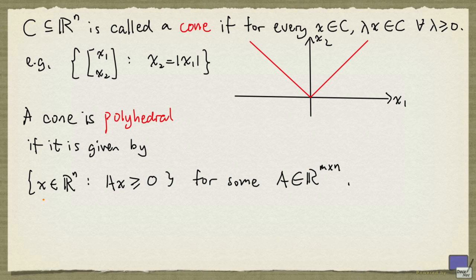Clearly, if we take an x in this set, all non-negative scalar multiples of x will satisfy these inequalities. So this is a cone. Polyhedral cones are very important in understanding the structure of polyhedra. In particular, the following result is quite useful.